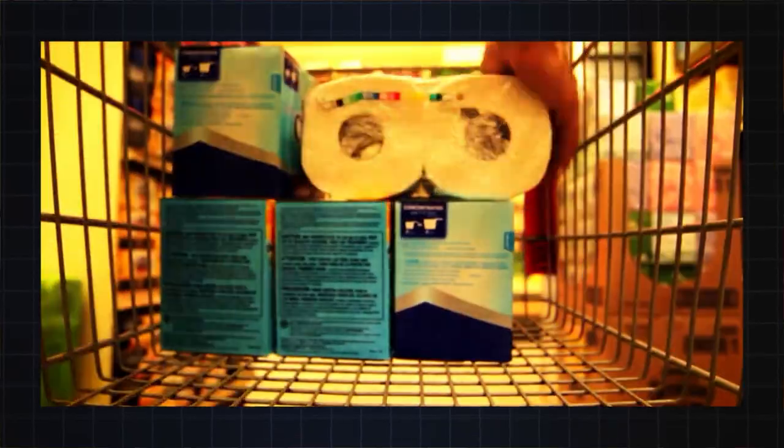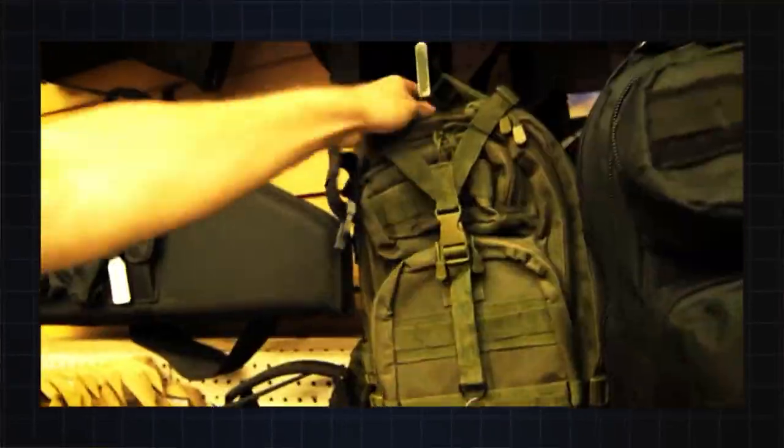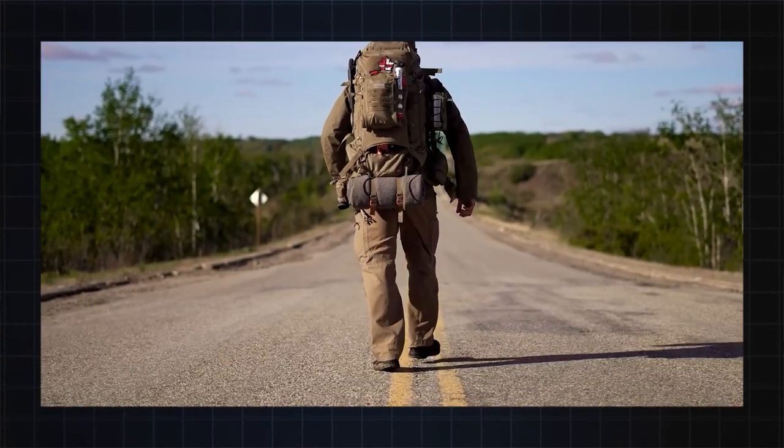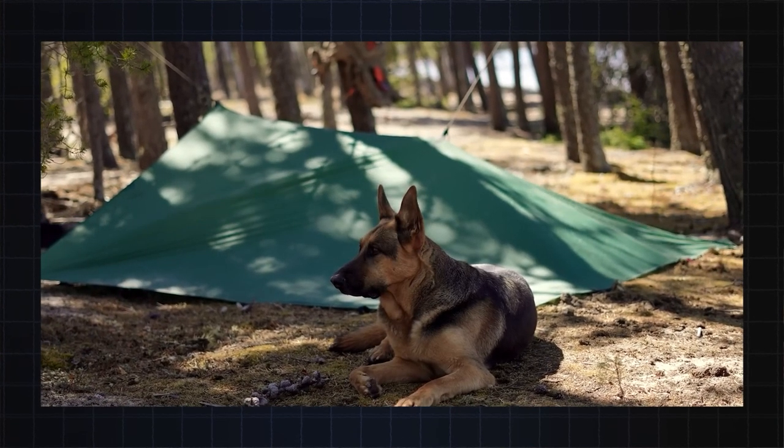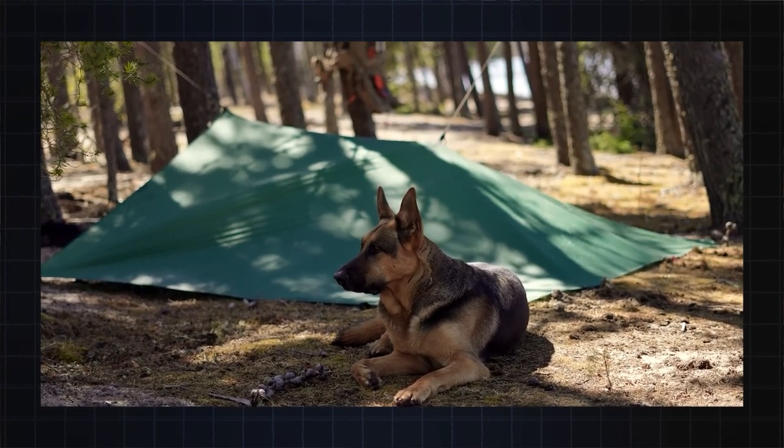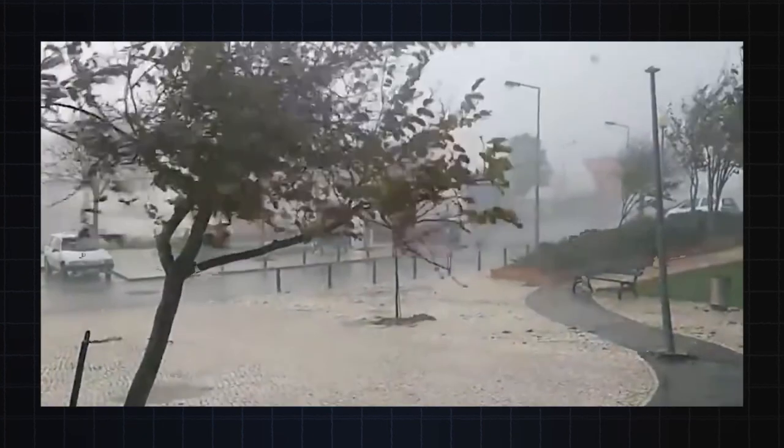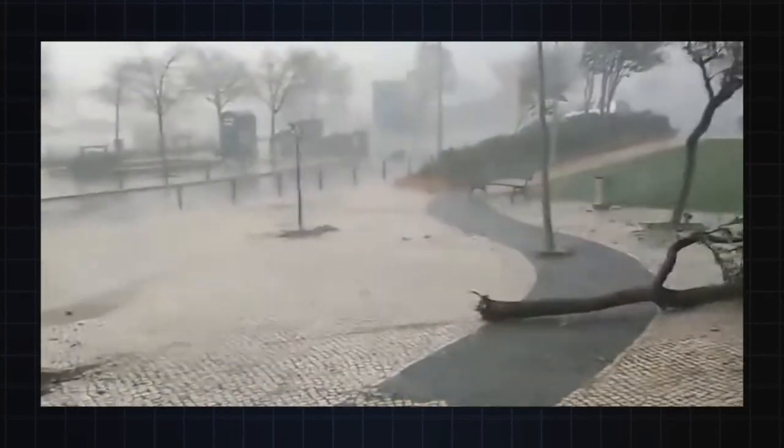There are things to be scared of out there, and it makes sense that, if we had the money, we would want to do something about it. We want to protect ourselves, our family members, and our loved ones. But perhaps there is something else taking place here. Perhaps the billionaire doomsday preppers are railing against something more profound, something a little more difficult to escape than a tsunami, an infectious disease, or even a nuclear bomb.